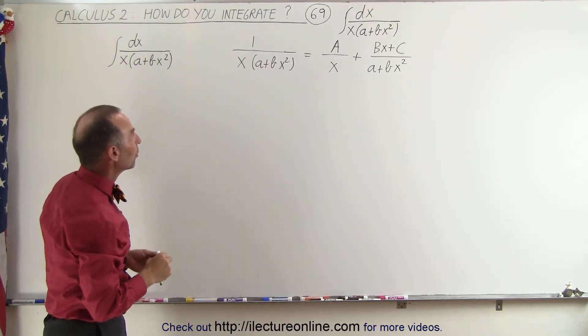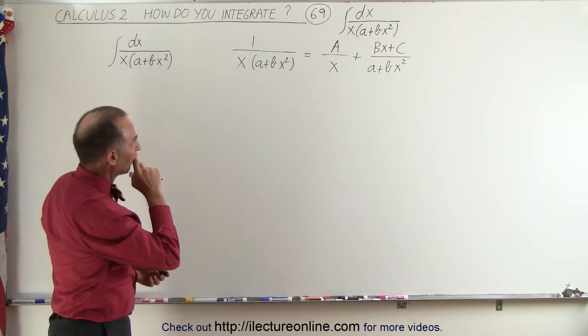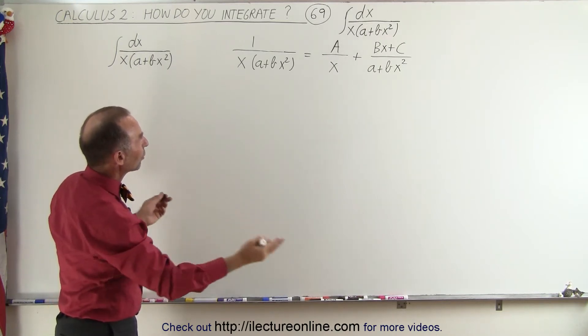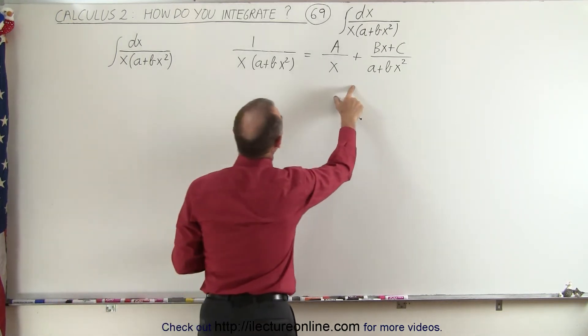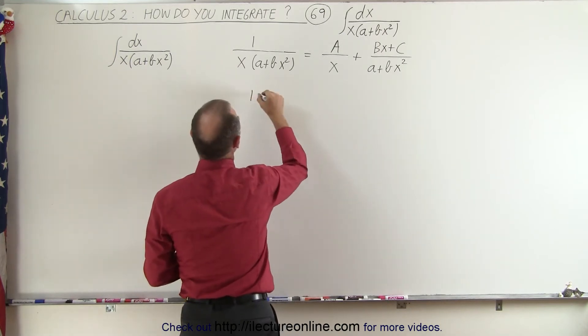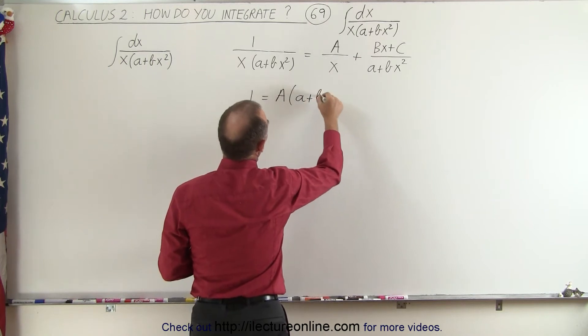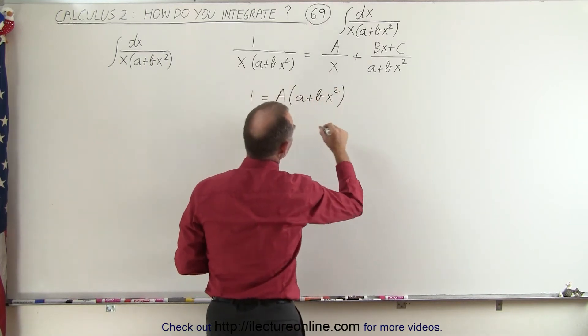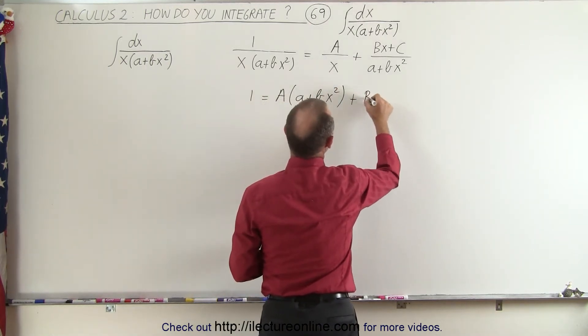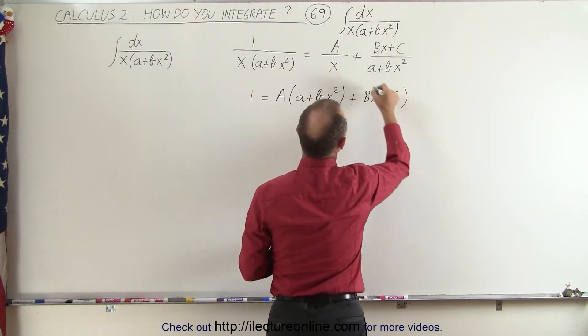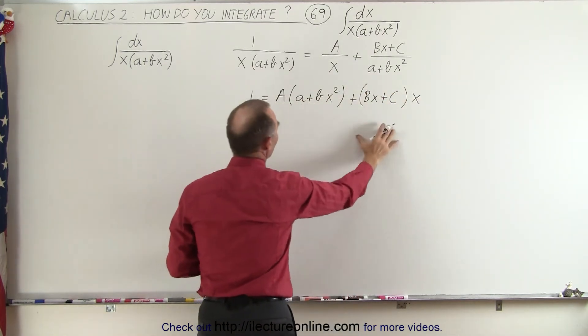So what we have here is we're going to multiply both sides of the equation by the common denominator. So here we have 1 is equal to a times a plus bx squared plus bx plus c multiplied times x. So we're going to multiply these out.